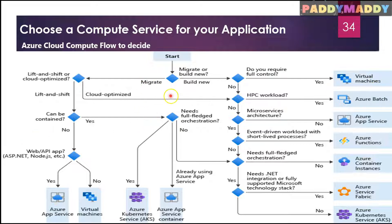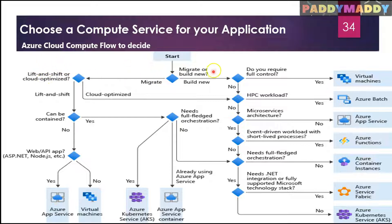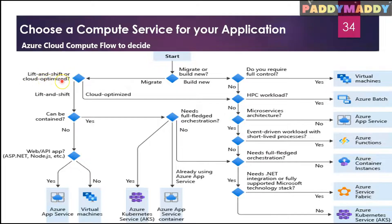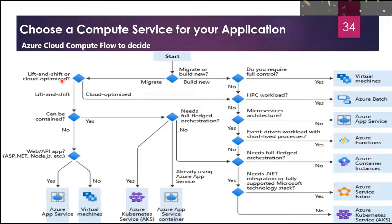On this diagram, when you start with any requirement, you need to think about whether it is going to fall under lift and shift or whether you're going to migrate to a new build. In most cases it will be lift and shift from on-premises or cloud optimized. Cloud optimized is a strategy for migrating to the cloud that refactors an application to take advantage of cloud native features or capabilities.